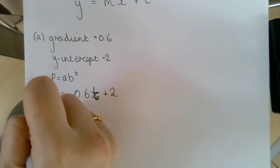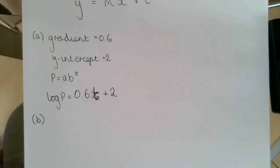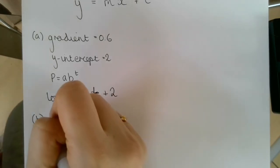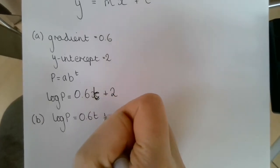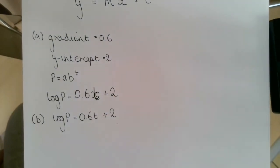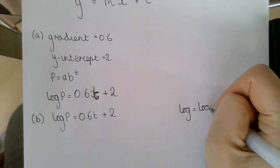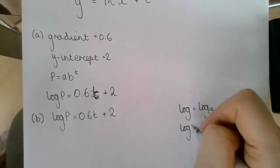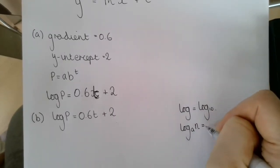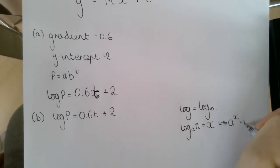For part b, it says using your answer to part a or otherwise, find the values of a and b, giving them to three significant figures when necessary. So we've just worked out that log p is equal to 0.6t plus 2. Now it's important to remember here that log is the same as log base 10.